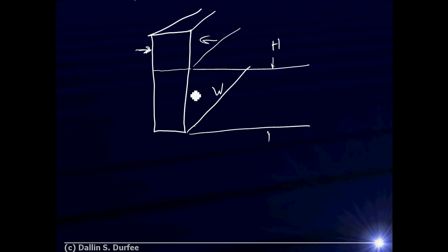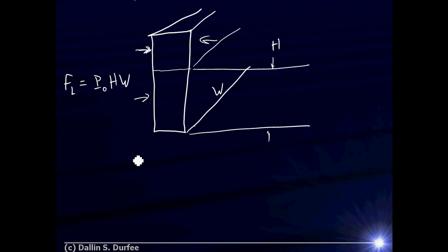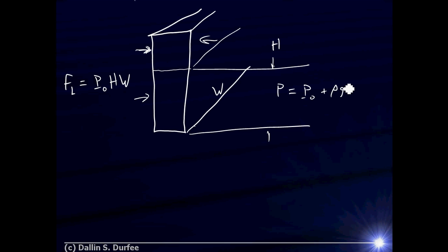For the bottom H meters of the dam, on the air side the force is easy: atmospheric pressure times area H·W. On the water side there's a problem — the pressure is not constant. It starts at atmospheric pressure at the surface and increases as rho·g·h as you go deeper. So I can't just multiply one pressure by the total area. I have to break the dam up into horizontal pieces that each have approximately constant pressure.